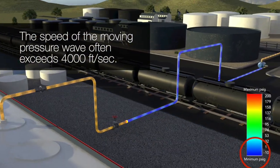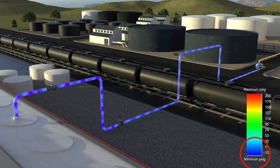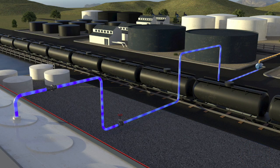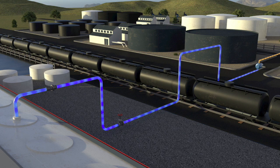When a low-pressure transient wave reaches the end of the system, it is reflected backwards with enough energy to collapse any vapor pockets that have formed.